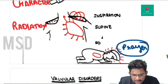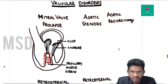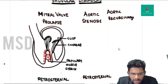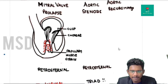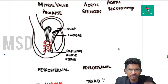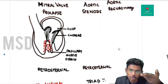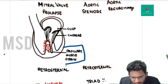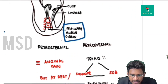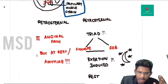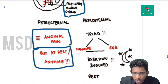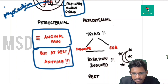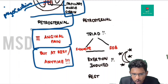Regarding valvular disorders: in mitral valve prolapse, chest pain can occur because the papillary muscle strains hard to prevent eversion of the cusps, but prolapse still occurs. This pain is not associated with exertion; it can occur at rest at any time. The site of pain is retrosternal, similar to angina pain, because the papillary muscle is a component of the myocardium.